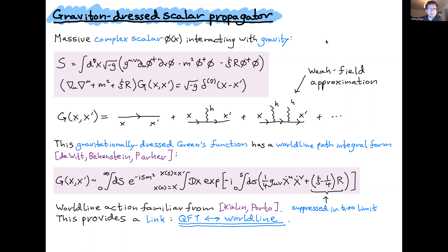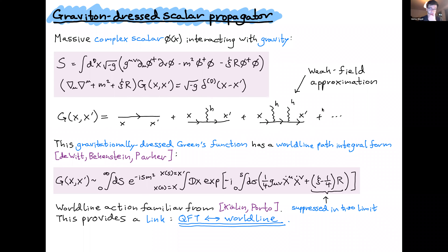In order to help understand that, let me start by thinking about this very basic scenario where we just have a massive complex scalar phi interacting with gravity, and just for fun let me throw in this coupling to the Ricci scalar as well. The key thing I'm going to be interested in here is this so-called dressed propagator for the scalar — not the normal trivial scalar propagator, one over p squared minus m squared, but the dressed propagator, where we think of the gravitational field as some fixed background which this propagator exists in the presence of.